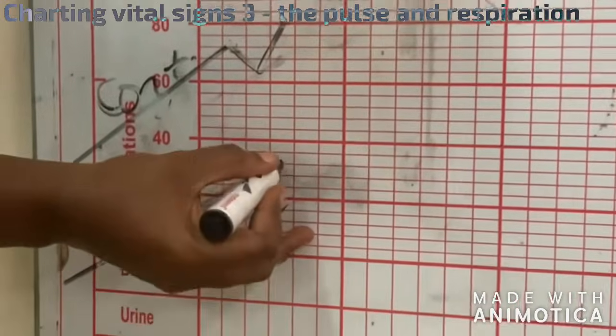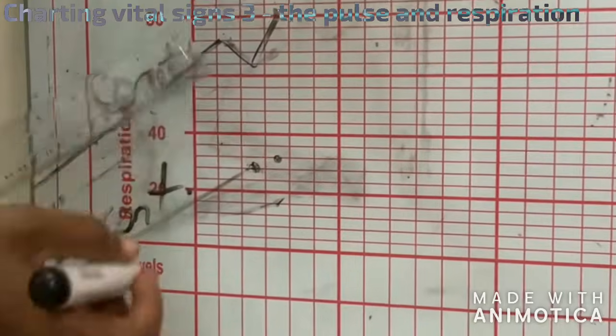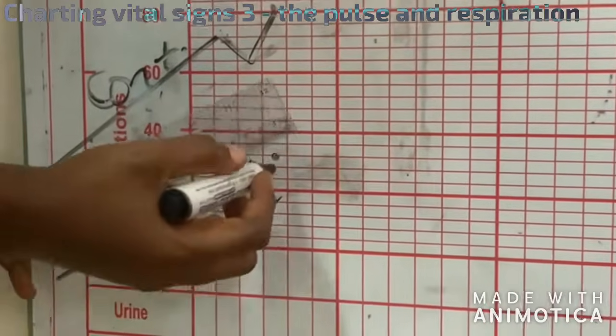So you can chart at 28 or 32. Then, inside the nurses' notes, you indicate that the respiration was 30.